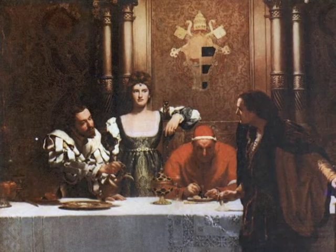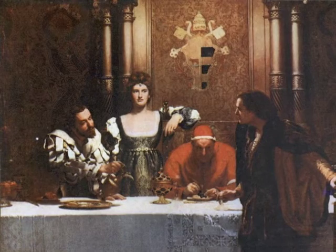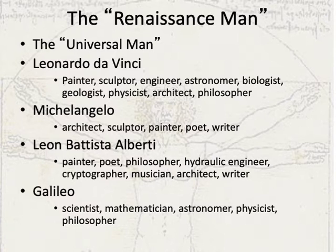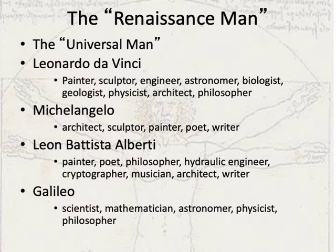The glorification of the human at the center of humanism created an image of the ideal person — the so-called universal man — which in Renaissance thought recognized no limits on human potential. Examples of this school of thought are among some of the most accomplished polymaths ever. Leonardo da Vinci, for example, made significant contributions in painting, sculpture, architecture, philosophy, biology, geology, physics, and engineering.